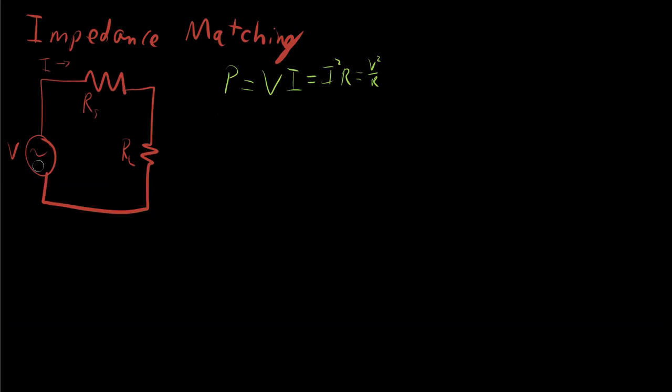We know that V equals IR. That means I is going to equal V over R. And so we have V over the total resistance here, which is just RS plus RL.